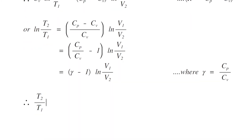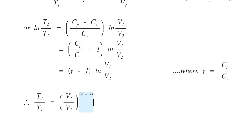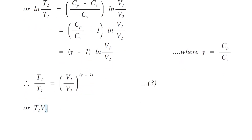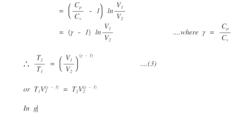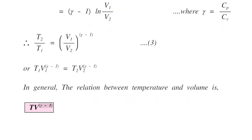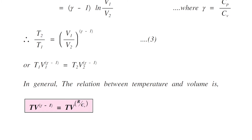Therefore, T2/T1 is equal to (V1/V2)^(gamma minus 1), or T1 V1^(gamma minus 1) is equal to T2 V2^(gamma minus 1). In general, the relation between temperature and volume in an adiabatic process is T V^(gamma minus 1) equals constant.